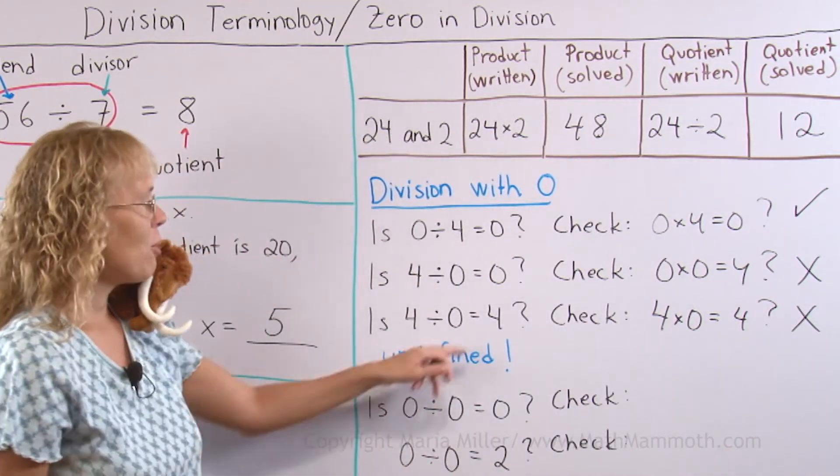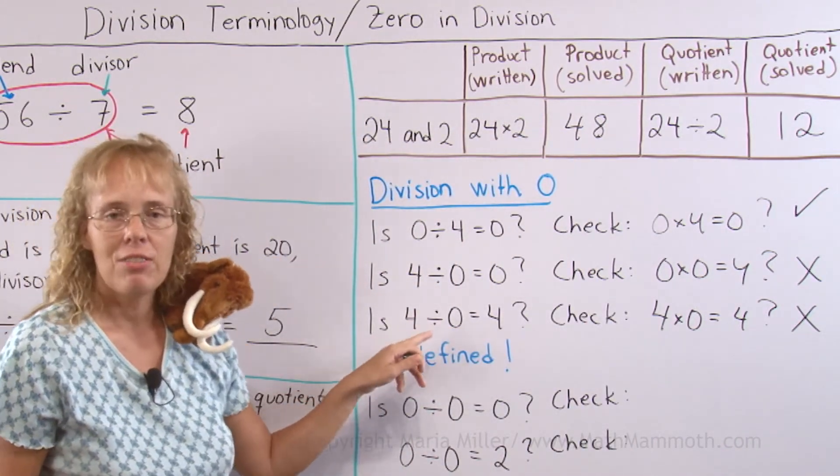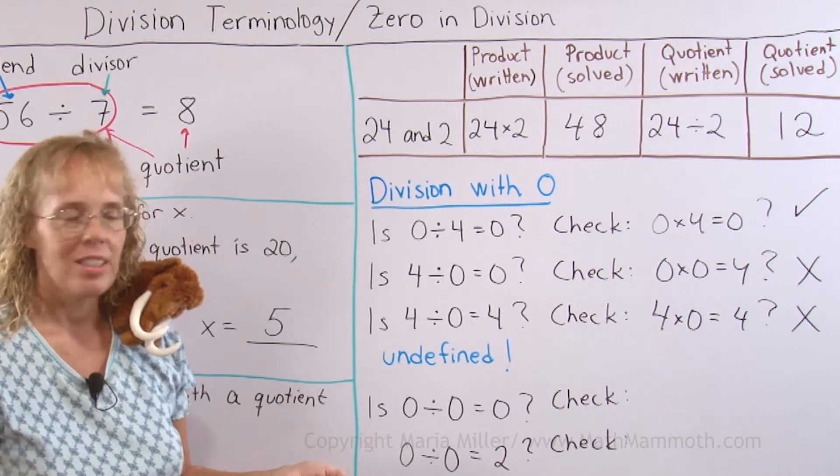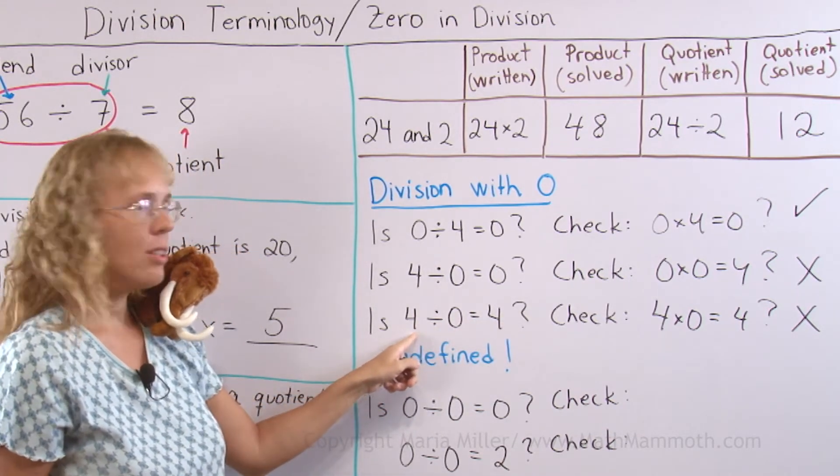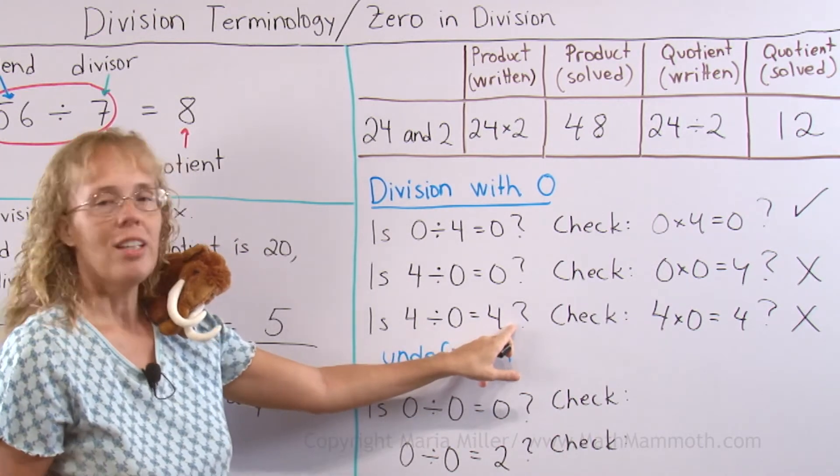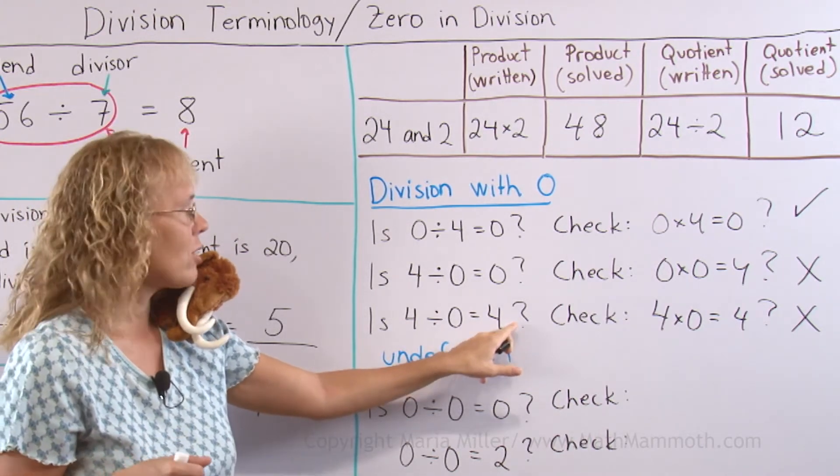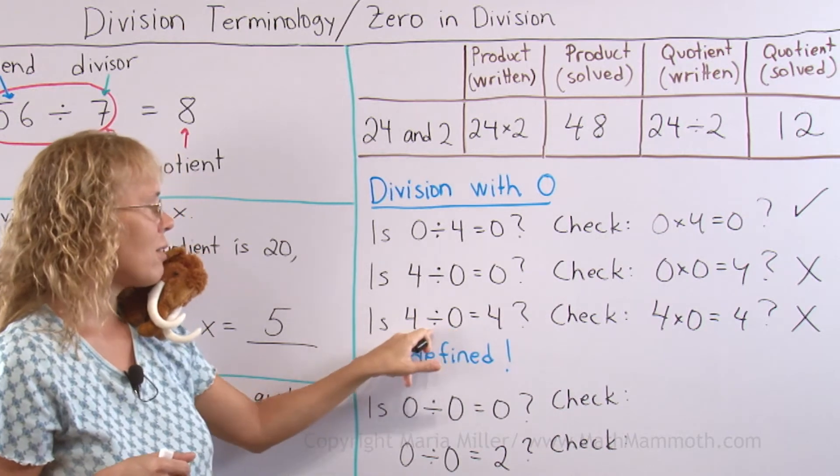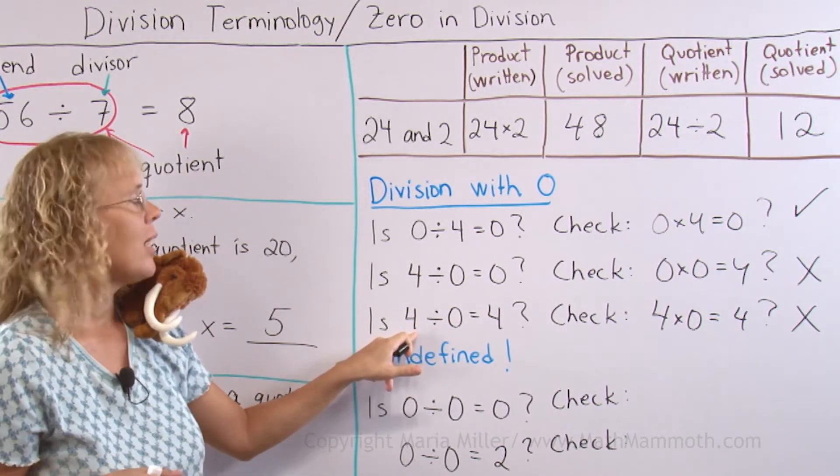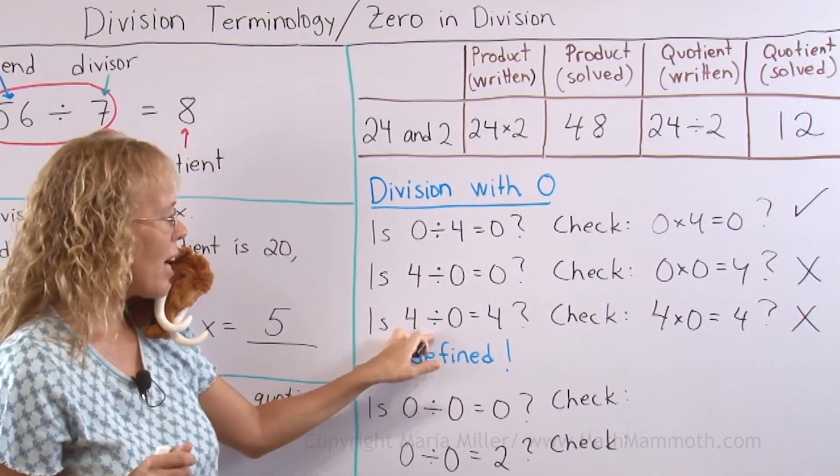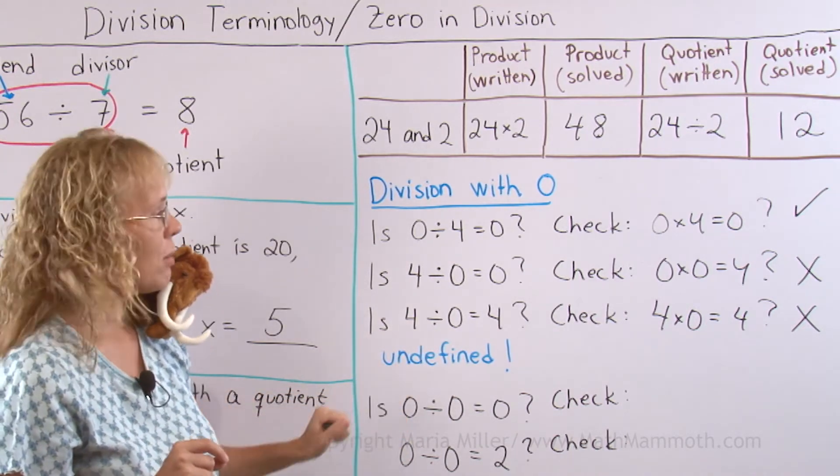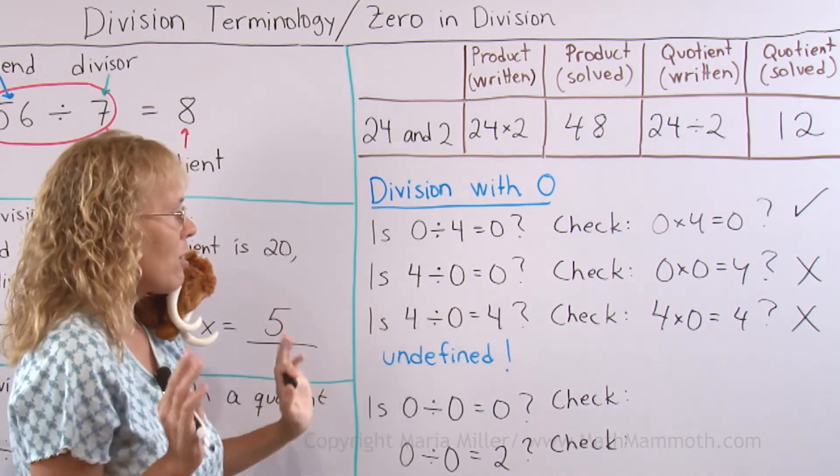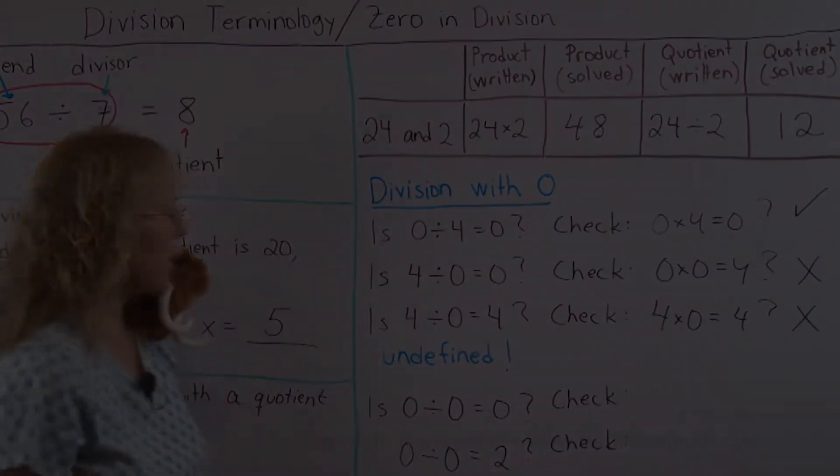The same thing would happen no matter what I try here. Let's say I try 4 divided by 0 equals 100. If there is 100 here, then 100 times 0 equals 4. It does not work. No matter what I put here, when I check it with multiplication, this number times 0 will give me 0 and never 4. So that is why division by 0 does not work. We say it is undefined. We cannot define it so that it would work with multiplication when you check it.